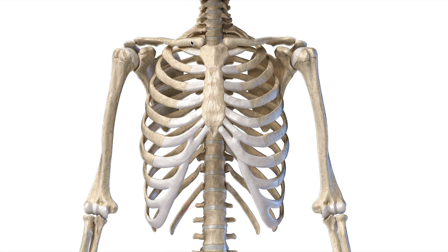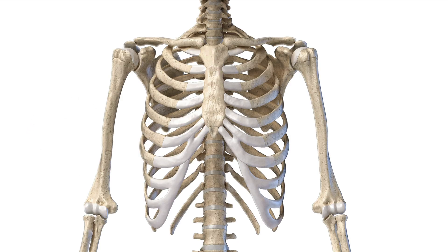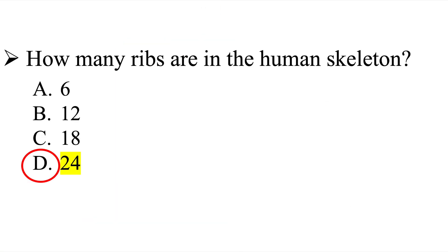So there are 12 on just this side alone, so we can go ahead and get rid of 6 and 18, leaving us with a 50-50 chance of picking either B or D. Let's take another closer look at the thoracic cage. On this side alone we had 12, and if you look at this side as well, we have to include this side — and this is 12 as well.